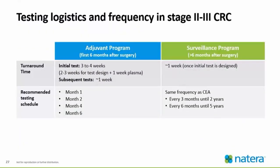Testing logistics and frequency for Stage 2 to 3 CRC patients: in the adjuvant program — the first six months after surgery — the initial test takes three to four weeks for results, because we're building the platform. Subsequent tests only take about a week. The recommended testing schedule is at one month, two months, four months, and then month six — though that can be changed by the provider. In the surveillance program — greater than six months after surgery — the initial test also takes three to four weeks, and subsequent tests have a turnaround time of about a week. Signatera testing is recommended at the same frequency as CEA: roughly every three months up to the two-year mark, and then every six months from years two to five.